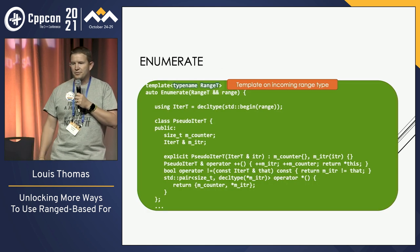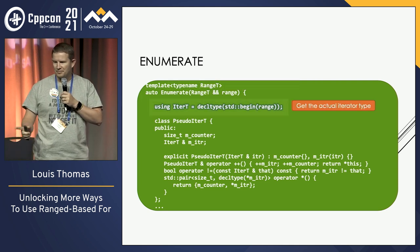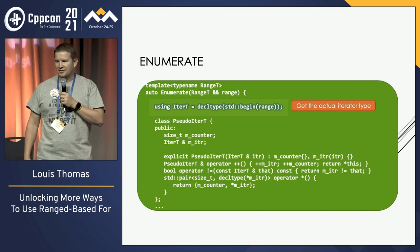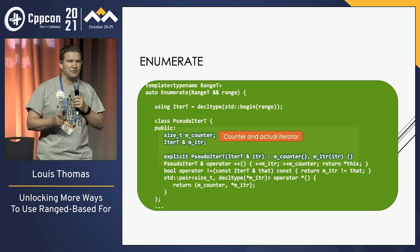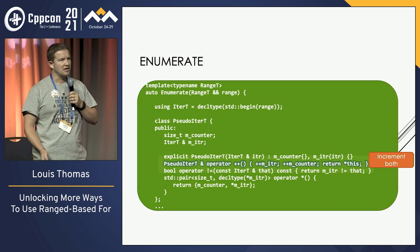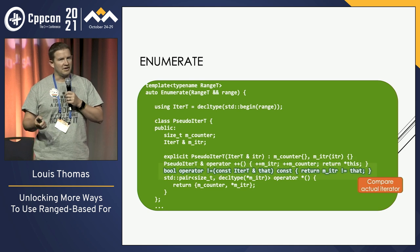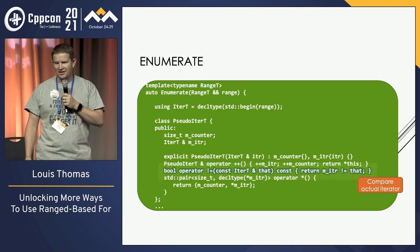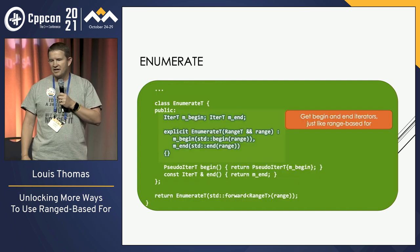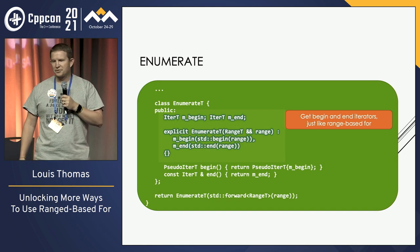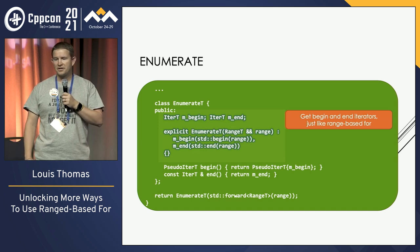So let's do enumerate. We're going to be templated over the range that we're looking at. We need to know the actual iterator type — we can use decltype to get it. We're going to need some sort of iterator that we can use, so we'll create a new one that will have the counter and the original iterator in it. We'll initialize it. On increment, we'll increment both the original iterator and the counter. When we compare for end, we only want to check the iterator and not the counter. Then we return on dereference the counter and the iterator.